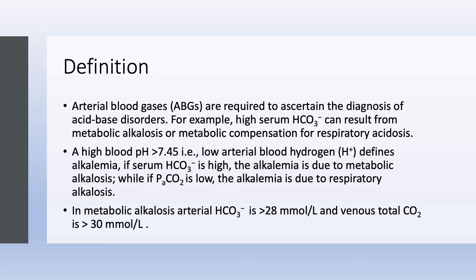The only way to make a diagnosis of an acid-base disorder is by getting arterial blood gases. If you have a high serum CO2 or high serum bicarbonate, you could have either metabolic alkalosis or metabolic compensation for respiratory acidosis. So you obtain an arterial blood gas: if pH is over 7.45, you have alkalemia. Alkalemia can be due to metabolic alkalosis — in which case serum bicarbonate will be high — or respiratory alkalosis, in which case PaCO2 will be low. Once you have the blood gas, it's easy to make that differentiation.